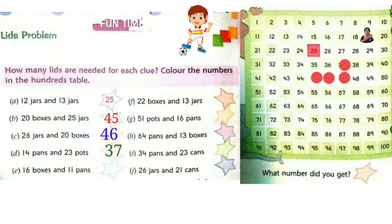Now question E: 16 boxes and 11 pans. 16 plus 11. In the 1's place: 6 and 1, 6 plus 1 is 7. And in the 10's place: 1 and 1 is 2. The answer is 27. Colour 27 in the 100's table.